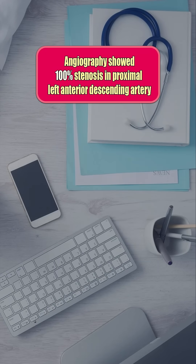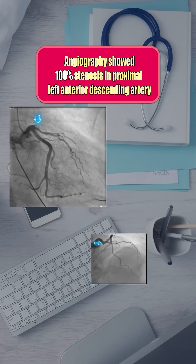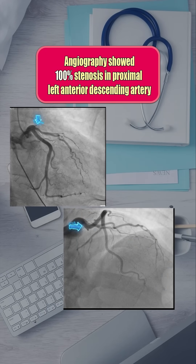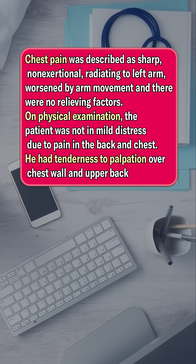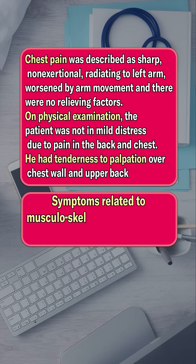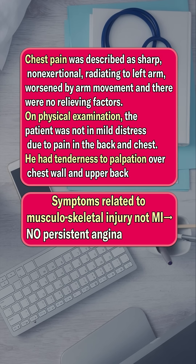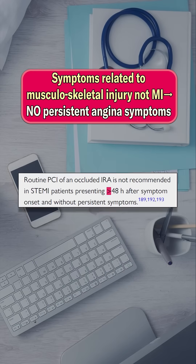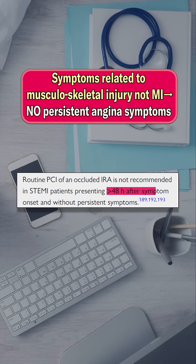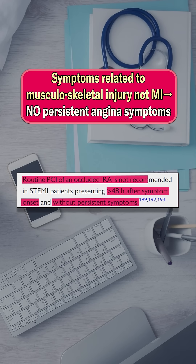Angiography confirmed a 100% occlusion of the proximal LAD. But here is the twist: his symptoms are consistent with musculoskeletal chest injury, not angina. And because more than 48 hours have passed since presentation and there are no ongoing ischemic symptoms, current ACG guidelines do not recommend stent implantation.